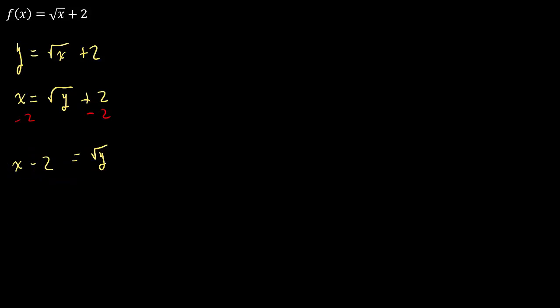And then we do what? We've got to get rid of the square root, so we're going to square both sides. So that gives me y equals x minus 2 squared.